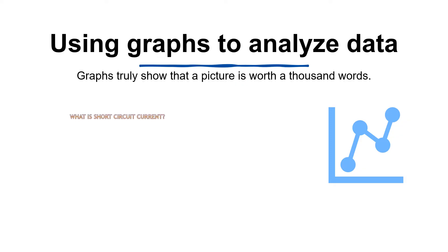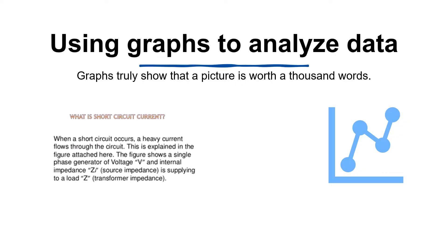However, adding pictures clearly helps us to understand what a short circuit case is. Displaying data in a graph has the same effect. A graph shows trends, patterns, and distributions that a table of raw data might not have revealed.